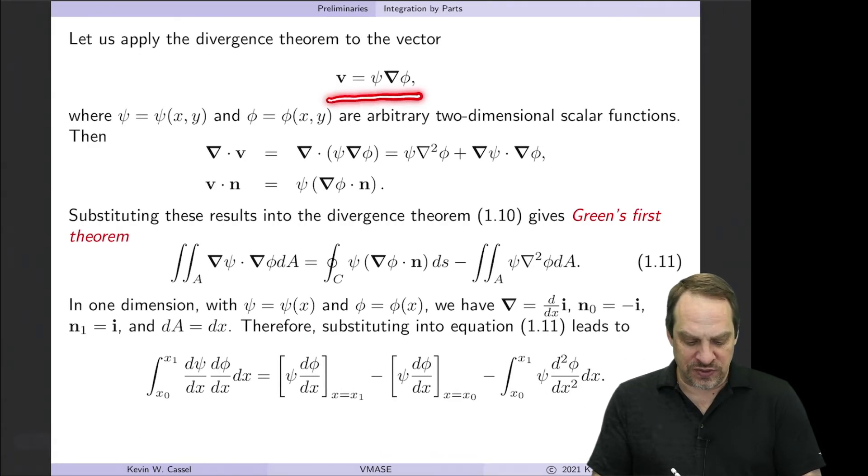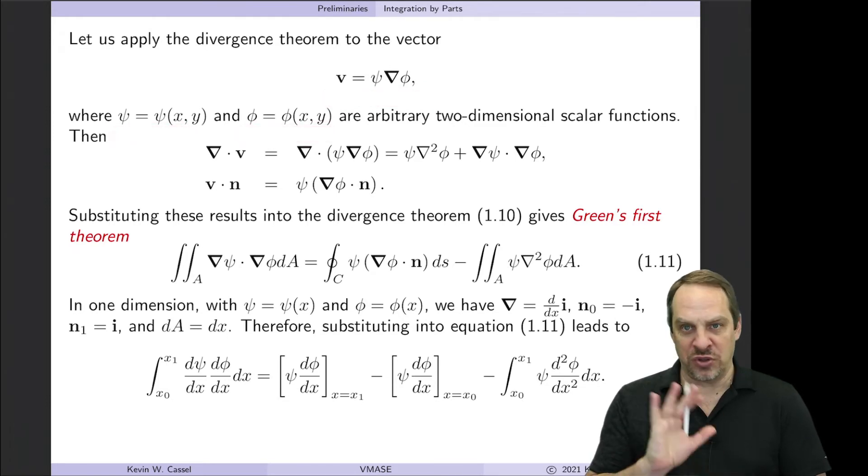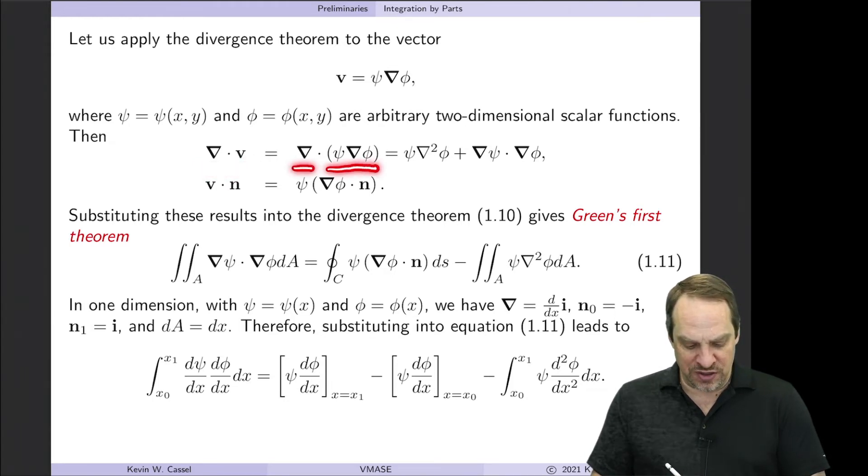So let's say that our vector V is ψ times ∇φ, where ψ and φ are both two-dimensional scalar functions. They're arbitrary at this stage. And let's just designate that V is ψ times the gradient of φ. And then let's evaluate the dot products in the integral on the left and the right. On the left we have the divergence, so ∇·V. So ∇·(ψ∇φ). The del operator, that's the gradient, so that's derivatives. So we use the product rule. So that is ψ times ∇·∇φ. ∇·∇ is ∇²φ. And then ∇ψ dotted with ∇φ. So product rule. So that's the first times the divergence of the second, plus the second times the divergence of the first.